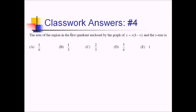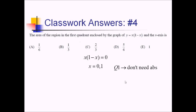For this problem, we want the area of the region in the first quadrant enclosed by this graph and the x-axis. The limits of integration come from where the function hits the x-axis — setting it equal to zero gives x values of 0 and 1. Do we need absolute value? Since they said first quadrant, we won't be dipping below the x-axis, so no absolute value needed. We just have the region between this upside-down parabola and the x-axis. The integral runs from 0 to 1 of the function.